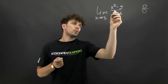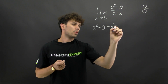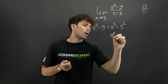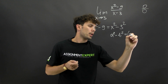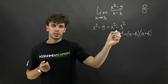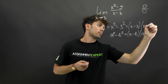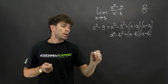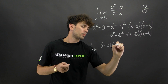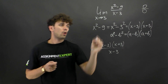Let's see: x squared minus 9 equals x squared minus 3 squared. This is very similar to the difference of squares formula: a squared minus b squared equals a minus b times a plus b. In our case x is a and 3 is b, so we get x minus 3 times x plus 3. Now we can rewrite our limit as the limit of x minus 3 times x plus 3 over x minus 3.